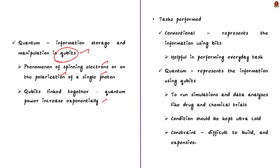The next difference is the tasks performed. Conventional computing represents the information with the help of binary codes, that is bit 0 or bit 1. If our everyday task is required to be completed with the help of a computer, then classical computers will be useful. While quantum computing represents the information with the help of qubits 0, 1 and the superposition state of both 0 and 1. If you want to run simulations and data analysis like drug and chemical trials, then quantum computers will be very useful. However, these types of computers are very difficult to build and it is also very expensive.